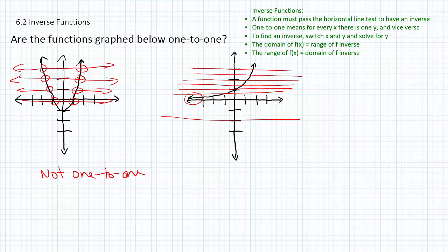So we would say that this graph passes the horizontal line test, therefore, it is one-to-one.